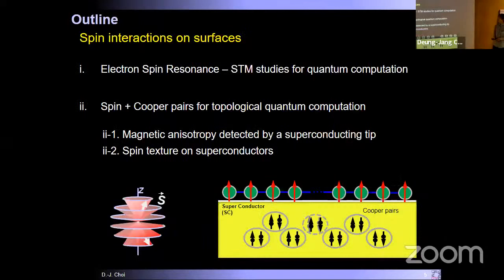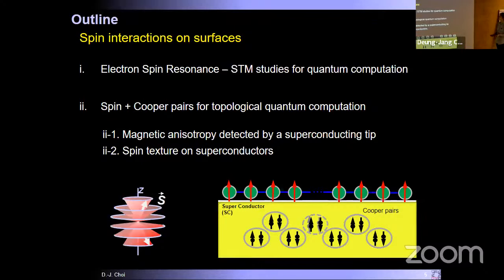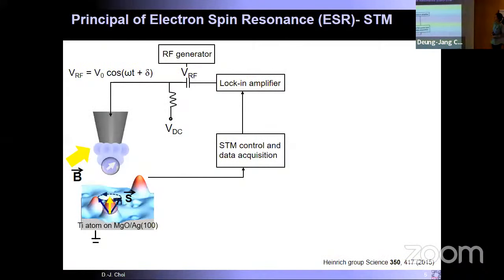The outline of my talk: the first part covers electron spin resonance STM studies for quantum computation, and the second part moves on to our studies on the spin zone superconducting surface for topological quantum computation. Let me explain the principle of electron spin resonance STM.